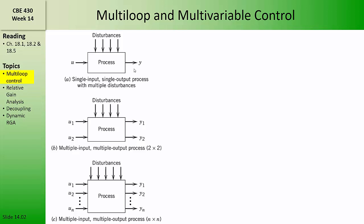However, most processes have multiple manipulated variables and multiple controlled variables. We call these MIMO processes for multiple input and multiple output. This is an example of a 2x2 MIMO process, but these can be very complicated with any number of manipulated and controlled variables.